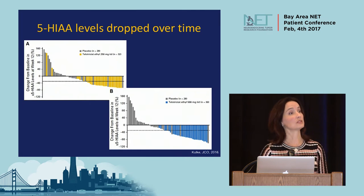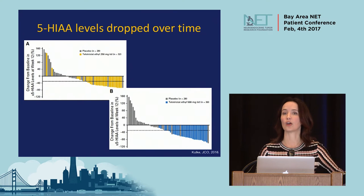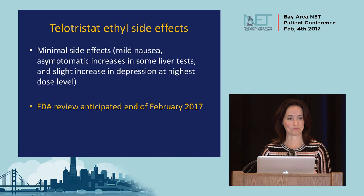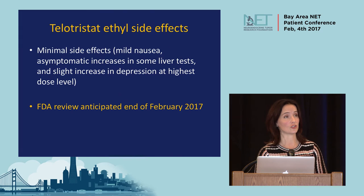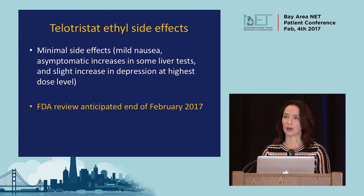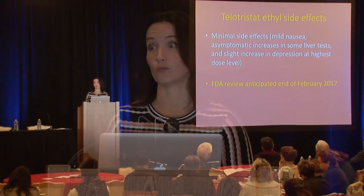Importantly, 5-HIAA — the hormone we think responsible for carcinoid syndrome — also decreased on telotristat. Side effects were minimal: some mild nausea and a slight increase in liver function tests. There was interest in studying depression as a risk, since serotonin affects cognition, but telotristat is not thought to cross the blood-brain barrier. There was a slight increase in depression at the highest dose, but it was not significant. The FDA is anticipated to make a decision on this drug by the end of February — very exciting.